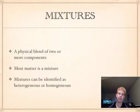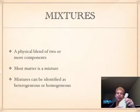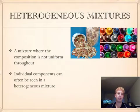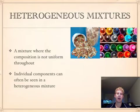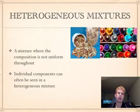Some examples of a mixture would be a fork, a glass, salad dressing, or the air that you are breathing. A heterogeneous mixture is where the composition is not uniform throughout. You can see that in the pictures here — a container of mixed nuts, where you can see each of the individual types of pasta and nuts, and a container of crayons. Individual components can often be seen in heterogeneous mixtures.